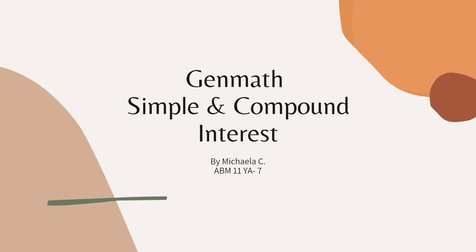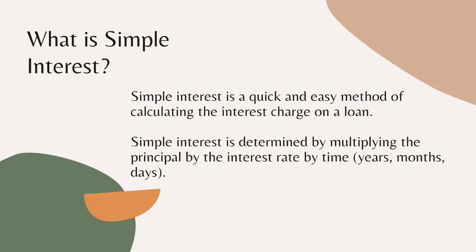So now we will study simple and compound interest. What is exactly simple interest? Simple interest is a quick and easy method of calculating the interest charged on a loan. Simple interest is determined by multiplying the principal by the interest rate by time — years, months, and days.